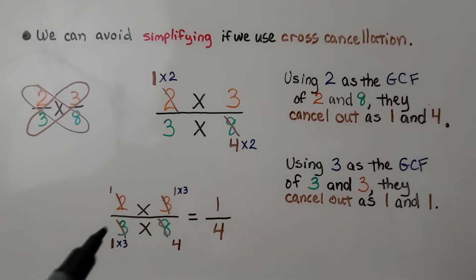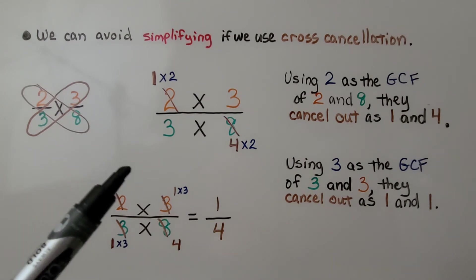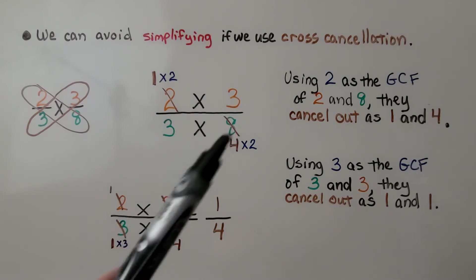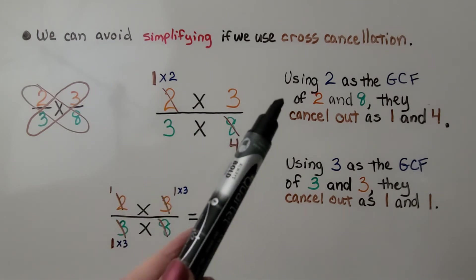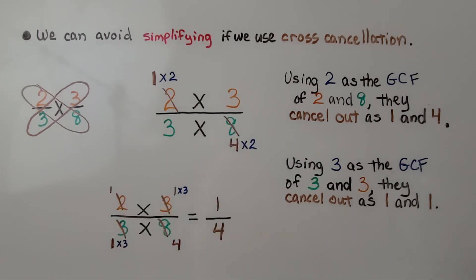We multiply 1 times 1 and get 1, and 1 times 4 and get 4, and it's simplified. What we did with cross canceling is we used their GCF right here in the problem, instead of finding the products of the numerator and denominator and then finding the GCF. Here we did it first.